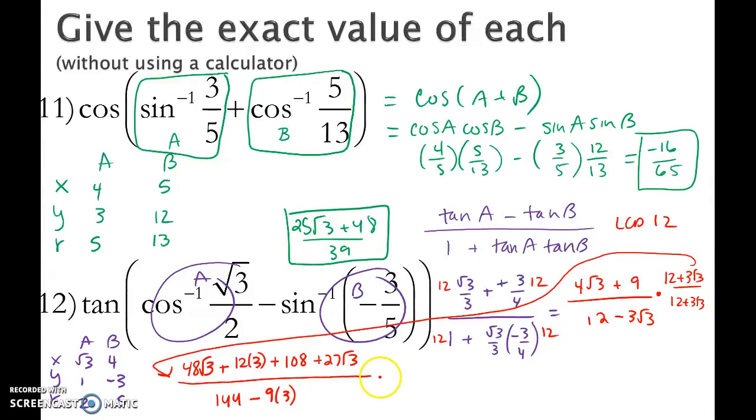So after all of my foiling, I get this problem over here on the bottom left in red. So now I'm going to go ahead and combine my like terms. I have 48 and 27 which gives me 75 root 3. I have 36 and 108 which gives me 144 and then I'm dividing this by 144 minus 27 which gives me 117.